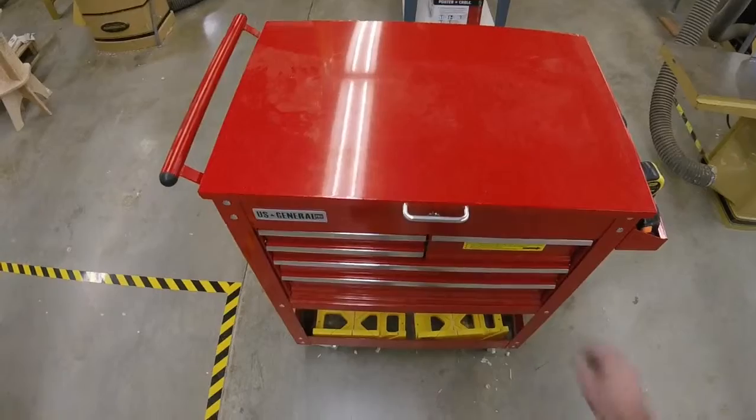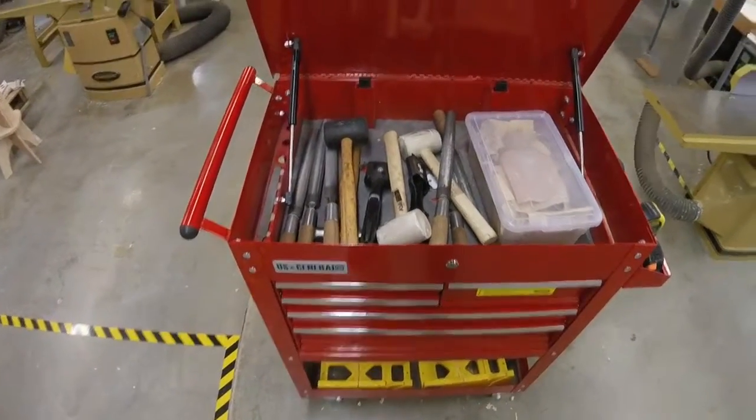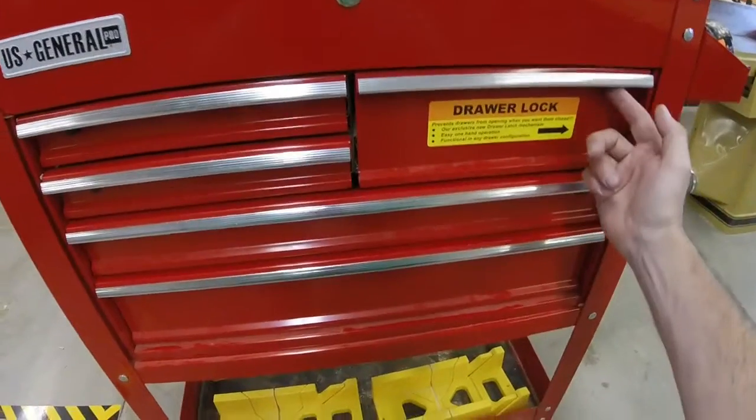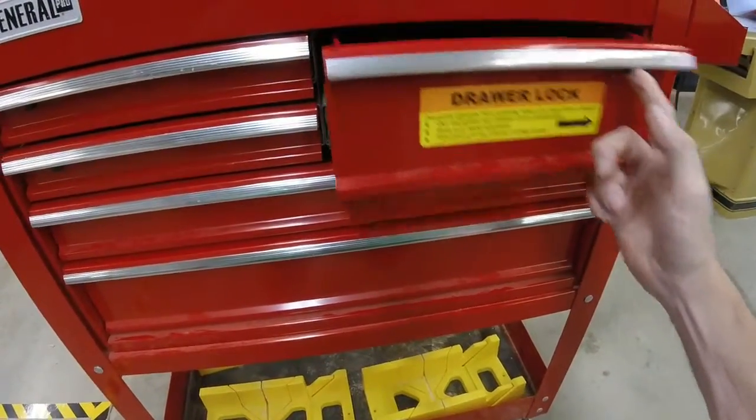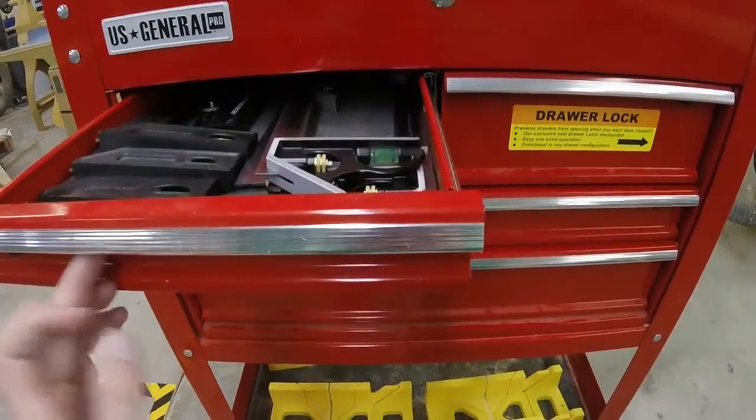Here's our tool cabinet. To open this, we need to first open the lid, and to open the drawers, we need to find the sliding lever right here to slide and open. They're either on the right or on the left.